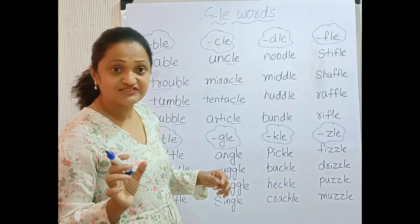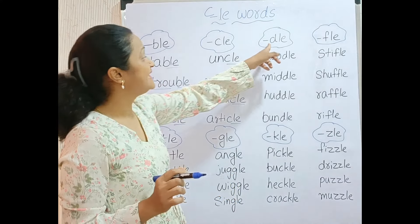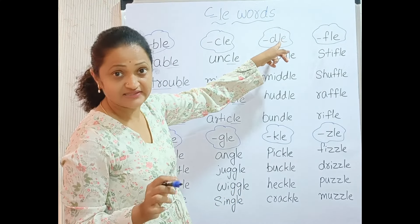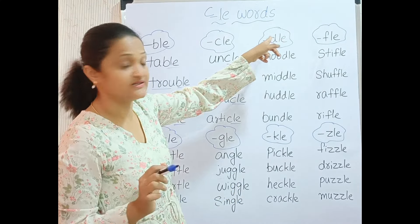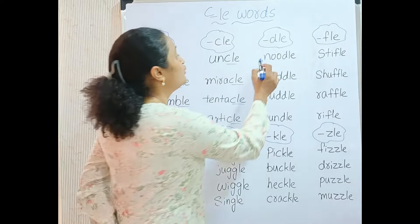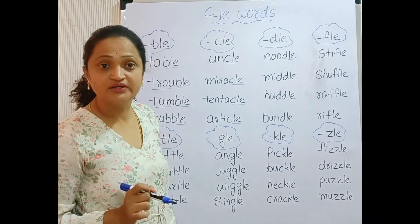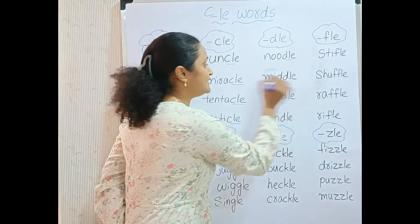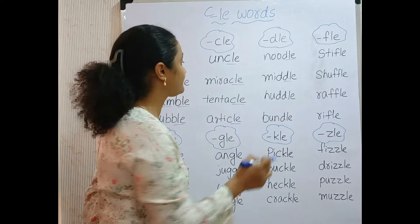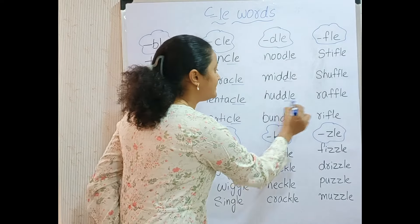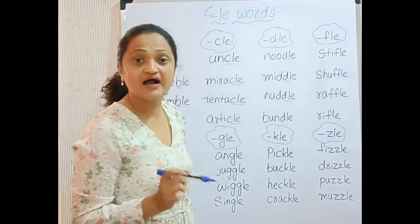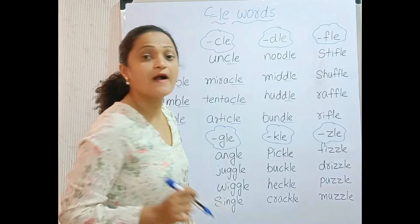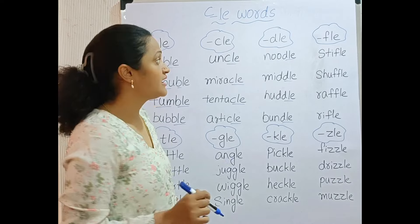Now the word ends with D-L-E. The sound is DLE. NOODLE. MIDDLE. HUDDLE. BUNDLE.